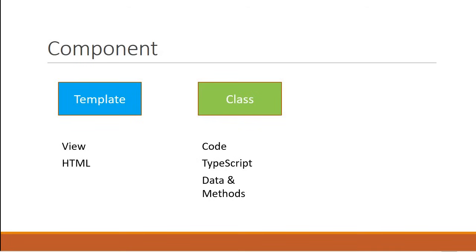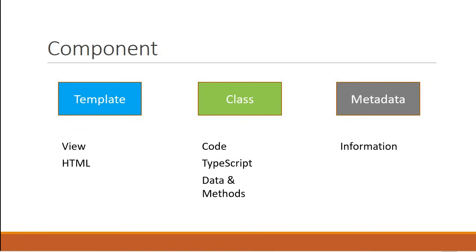For example, we can have a method to show or hide an element based on the value of a property. Finally, a component also has some metadata attached to it, and this is the information that Angular needs to decide if the particular class is in fact an Angular component or just a regular class. The metadata is defined using a decorator, which is a feature in TypeScript. A decorator is just a function that provides information about the class attached to it, and for a component we use the component decorator.